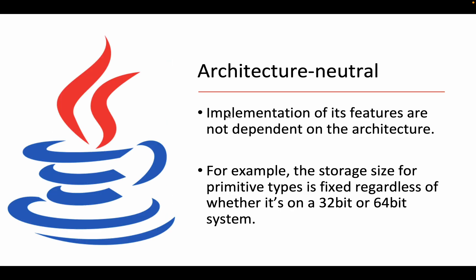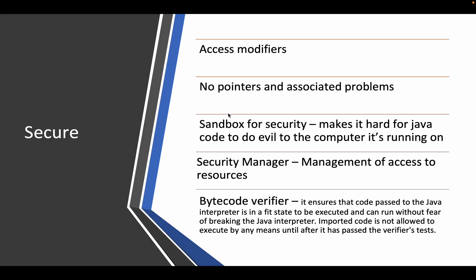Java is also architecture neutral, which means the implementation of its features is not dependent on the architecture. For example, the size of a primitive type is fixed regardless of whether it is on a 32-bit or 64-bit system.